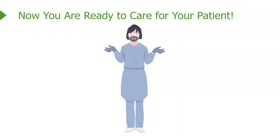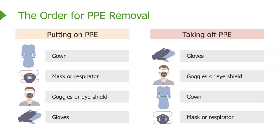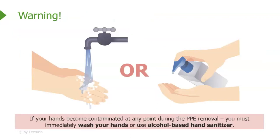Now it's time to remove your PPE. When you put it on, the order was gown, mask or respirator, goggles or eye shield, then gloves. But when you take it off, the order is different. First you remove the gloves — the nastiest things — then goggles or eye shield, then the gown, then the mask or respirator. This next point is really important: if at any time while removing PPE your hands become contaminated, stop and immediately wash your hands or use an alcohol-based sanitizer.